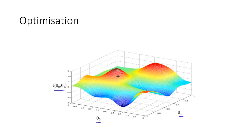For example, from here I go to here — the cost function is more than what it was previously, so I come down and find that it is now less than before. I further come down and it becomes even less. Slowly, taking small steps, I reach the point where the cost function is minimum. At this point, the corresponding values of theta 0 and theta 1 are selected. These two values are going to be the regression parameters, using which I will draw my regression line.